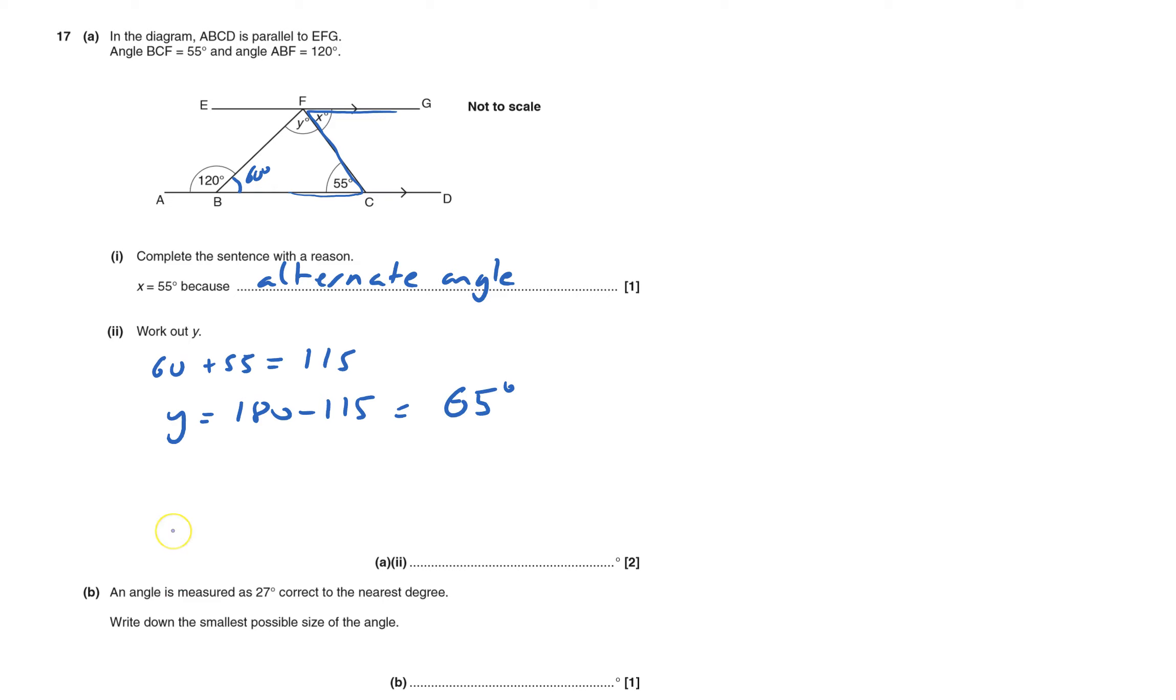And now B. An angle is measured as 27 degrees correct to the nearest degree. What's the smallest it could be? Well, it can't be much smaller. Actually, it's got to be 27 degrees. It could be 26.5 because that would round up. 26.4, if you measured at 26.4, that would round down to 26, so it can't possibly be 26.4. 26.5 it would round up. It's the first angle which would round up in terms of size, and so we've got 26.5, and that's the answer to 17.